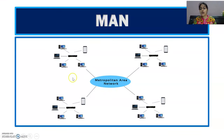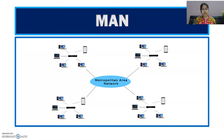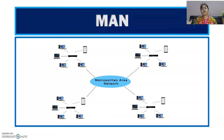We can connect different LANs together to form a MAN. For example, suppose my office has 4 branches within a city. Each branch has its own LAN network. By connecting those LAN networks further, we create our MAN network.